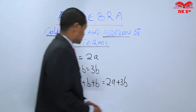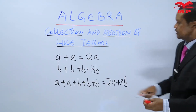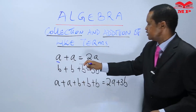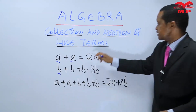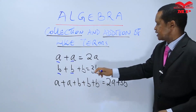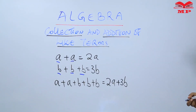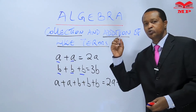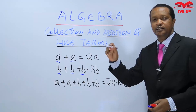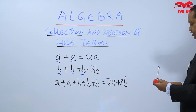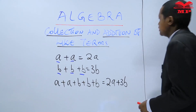So learners, these are terms — this one is a term, this B is what we are calling a term. In this lesson we are going to learn how to collect and add like terms. Let me give another illustration here.